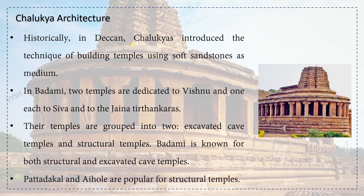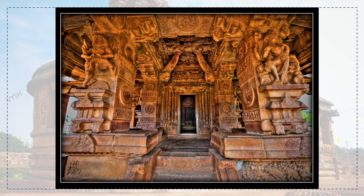Chalukyan architecture: historically in the Deccan, the Chalukyans introduced the technique of building temples using soft sandstones. In Badami, two temples are dedicated to Vishnu and one each to Shiva and to the Jain Tirthankaras. The temples are grouped into two types: excavated cave temples and structural temples. Badami is known for both, while Patadakal and Aihole are popular for structural temples. This is one of the temples from Badami — you can see how intricate the carving is and how beautifully it has been designed.